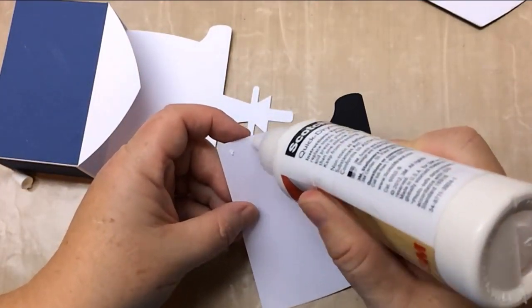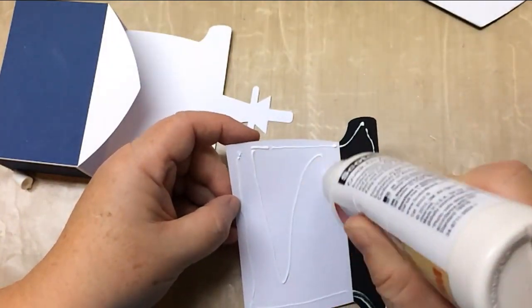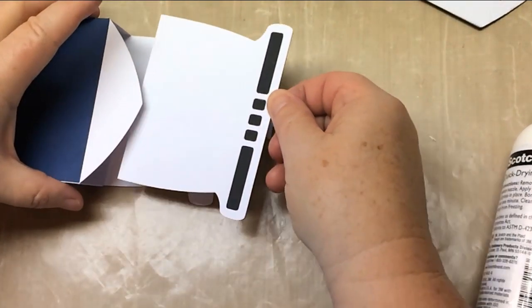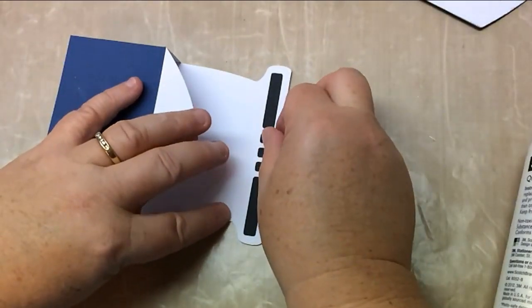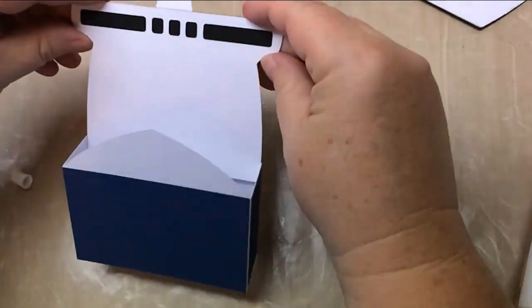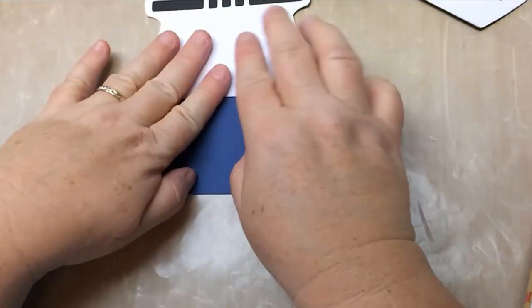So now we're going to put this larger panel in. We did it afterwards because it kind of overlaps the tabs inside. So you're going to carefully slide it in and then match it with the shape on the back of the card, and then I kind of put my fingers there to make sure I get it in the right place.